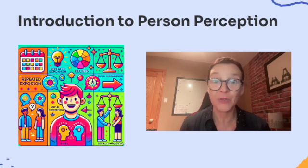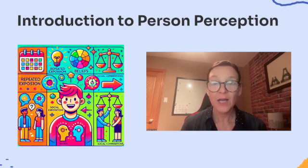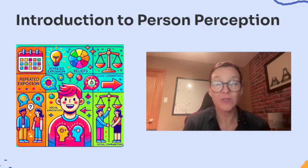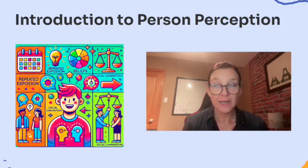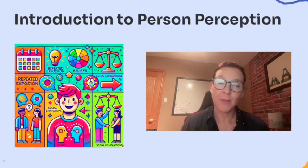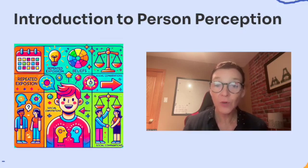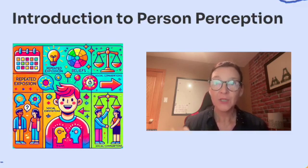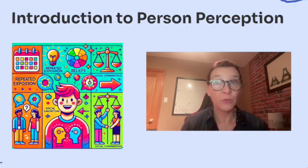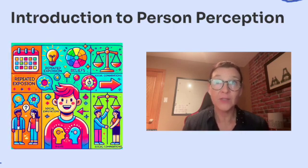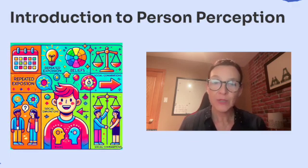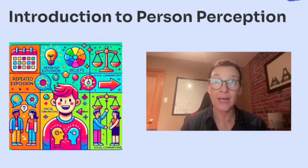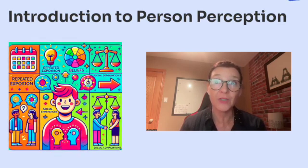So why is person perception important? First, it explains behavior — it helps us understand why people behave the way they do. If someone seems withdrawn, you might interpret it as shyness or disinterest, which affects how you interact with them. Second, self-concept — the way we perceive ourselves is shaped by how others perceive us and how we compare ourselves to them. Third, social interactions — perceptions influence whether we approach others with trust, avoid them due to mistrust, or collaborate based on mutual understanding.